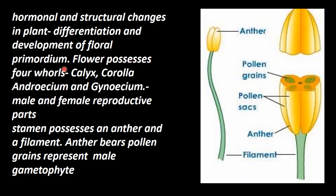Flowers possess four whorls: calyx, corolla, androecium, and gynoecium. Androecium is the male reproductive organ, and gynoecium is the female reproductive part. The androecium has stamens, and each stamen possesses an anther and a filament.